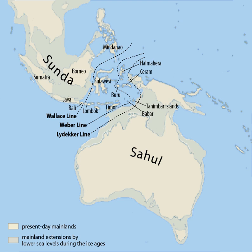All of Sundaland is within the tropics; the equator runs through central Sumatra and Borneo. Like elsewhere in the tropics, rainfall, rather than temperature, is the major determinant of regional variation. Most of Sundaland is classified as perhumid, or everwet, with over 2,000 millimeters of rain annually.